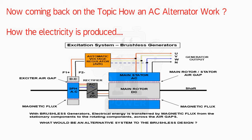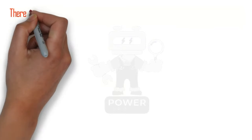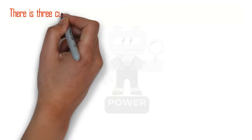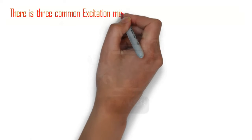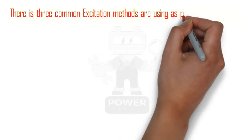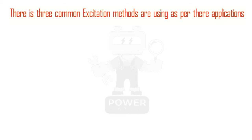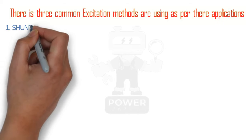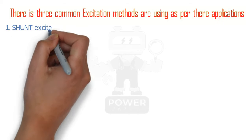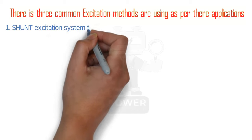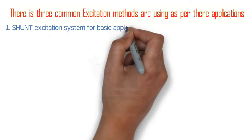With a brushless generator, electrical energy is transferred by magnetic flux from the stationary components to the rotating components across the air gaps. There are three common excitation methods used as per their applications. Number one is the shunt excitation system, used for basic applications.